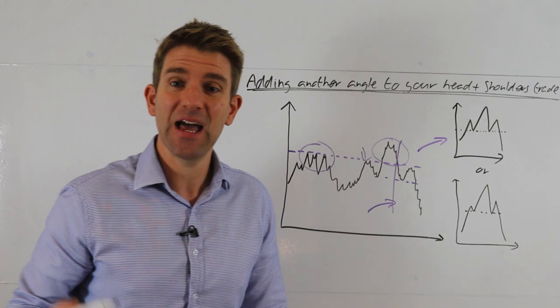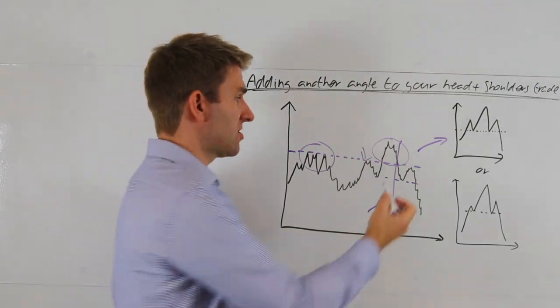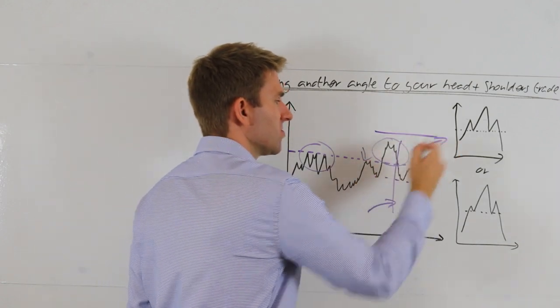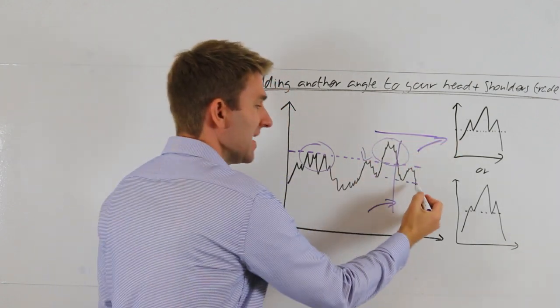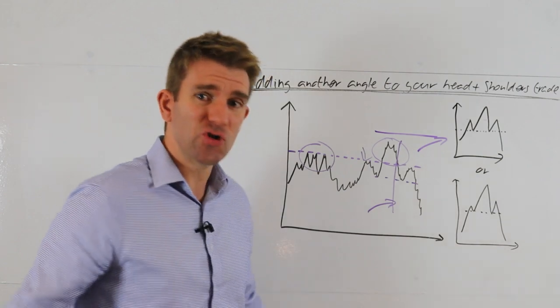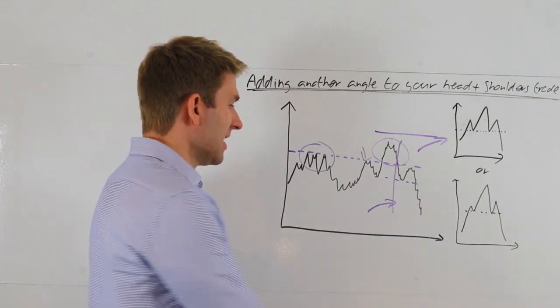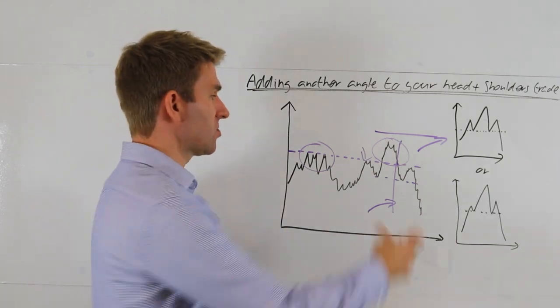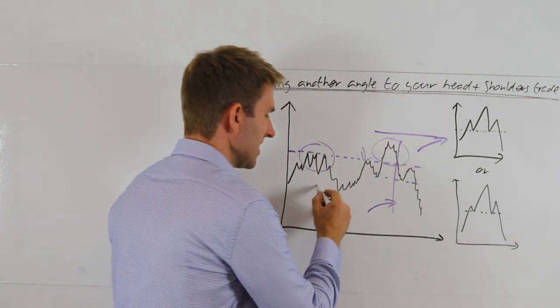Look to fade that as it starts to stall there because your risk reward is a bit more quantified. Obviously your stop's going to be above that head. You can then get extra aggressive and start to add to the trade as it comes through the neckline and then look for very low moves. Because ultimately this is a bigger broader pattern that's probably likely to take out that last swing low there because of the nature of it.